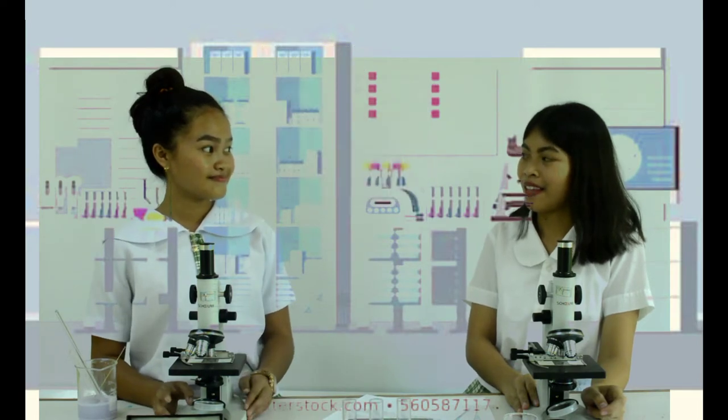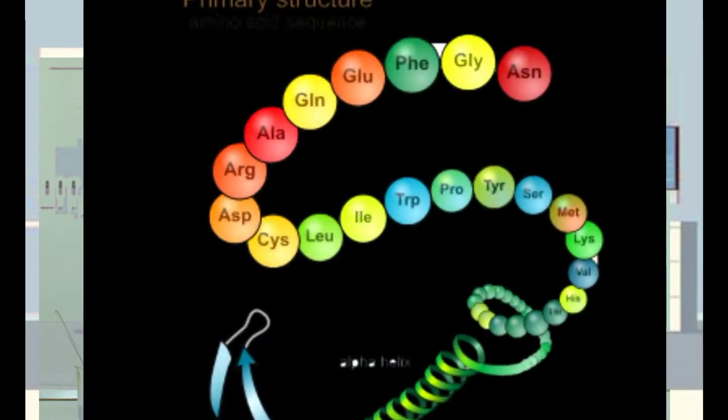Have you ever wondered how our skeletal system will form? Our hair and muscle, how does it form? Well, our body is made up of protein, actually excluding water and fat.